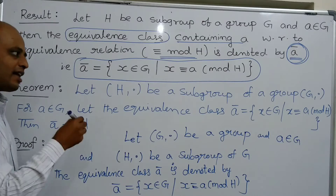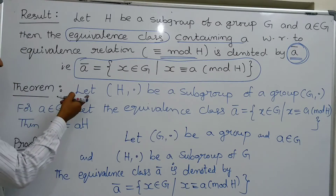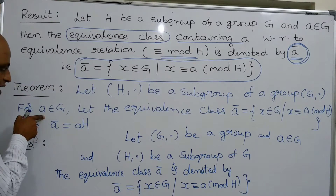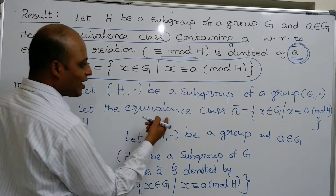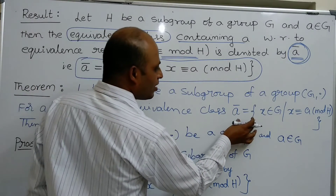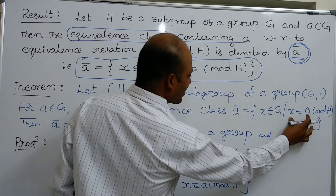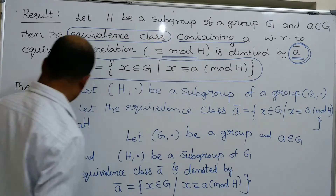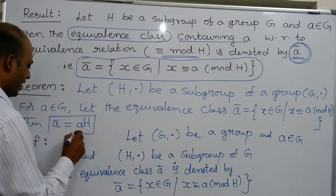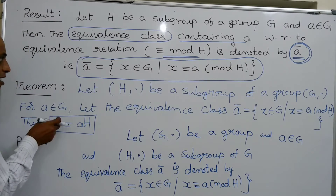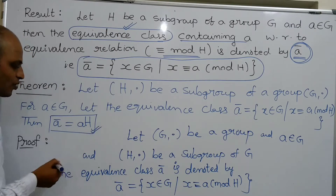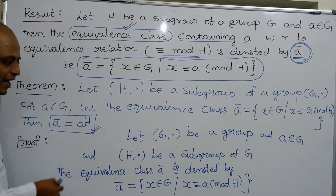Depending upon this result, there is a theorem: Let (H, ·) be a subgroup of a group (G, ·). For an element a belonging to G, the equivalence class a bar, defined as {x ∈ G : x ≡ a mod H}, satisfies a bar equals aH. This means the equivalence class containing a is equivalent to the left coset aH.